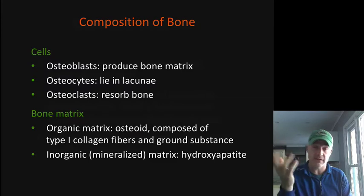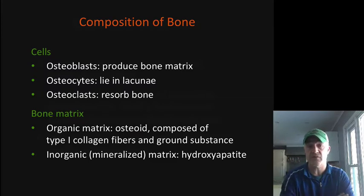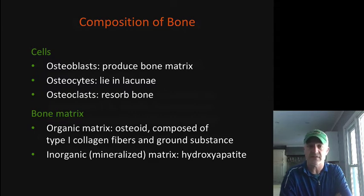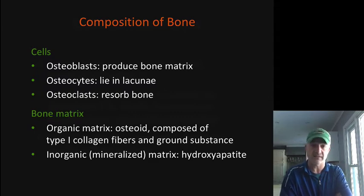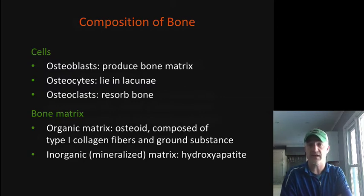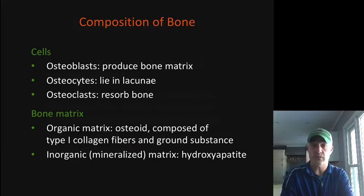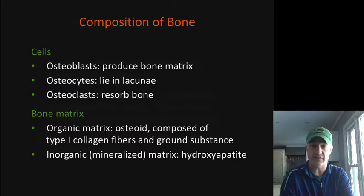With bones, we see a lot of the same cell types we talked about before. We have blast cells — like chondroblasts and fibroblasts — these are the ones that produce the matrix. In this case they're called osteoblasts, and what they produce is called osteoid, which includes collagen fibers as well as calcium salts that become the bony matrix. Once osteoblasts become trapped within the bony matrix, we call them osteocytes.